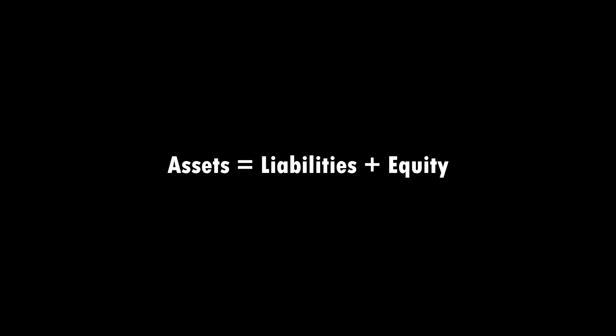Before we jump into it, I first want to explain what a balance sheet is. Essentially a balance sheet is one of three financial documents that a company is obligated to share with the public. This will help us as investors to determine the financial position of that company. The balance sheet consists of three main factors: assets, liabilities, and total shareholder equity. The way these three numbers balance out is very important and will ultimately help us determine the financial position of the company.